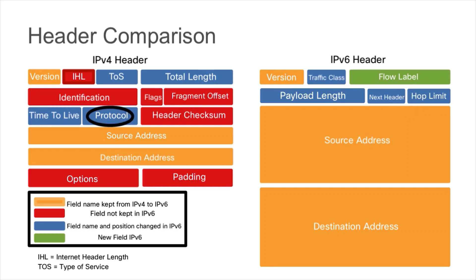IP version 4 has a protocol field. In IPv6, this is replaced by the next header field. The next header can point to a layer 4 header such as TCP or UDP, or it could point to another layer 3 header like a routing header — so the functionality was extended slightly.